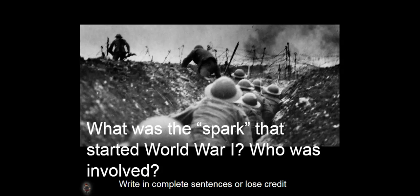You should have written something about how on June 28th, 1914, Archduke Ferdinand of Austro-Hungary and his wife were assassinated by Serbian terrorists — a terrorist group known as the Black Hand. Gavrilo Princip was the shooter.